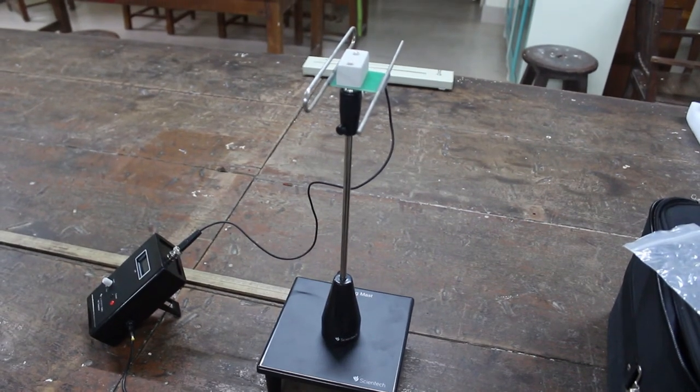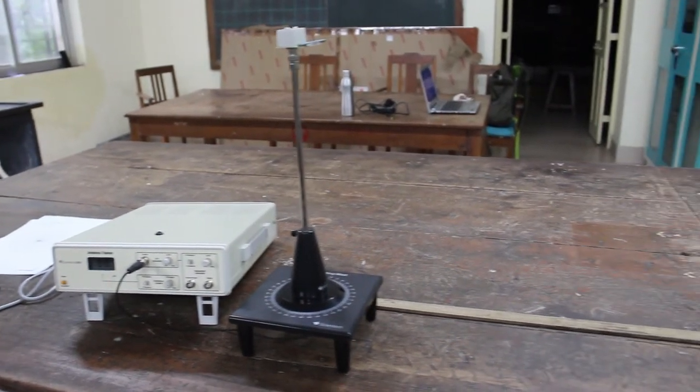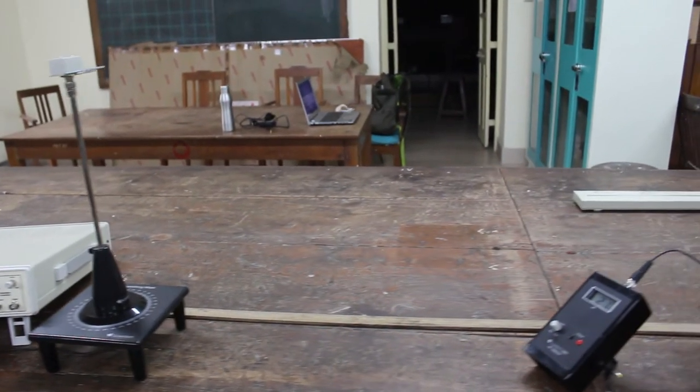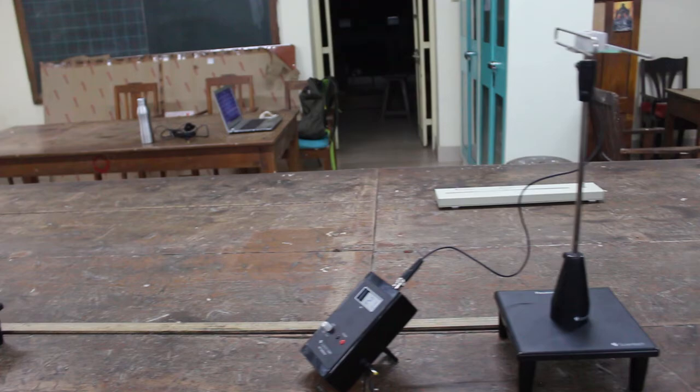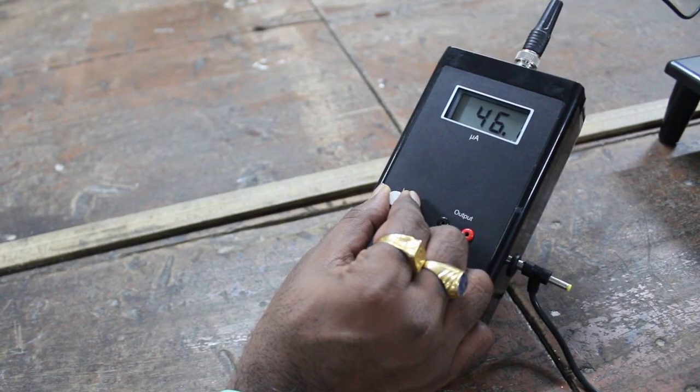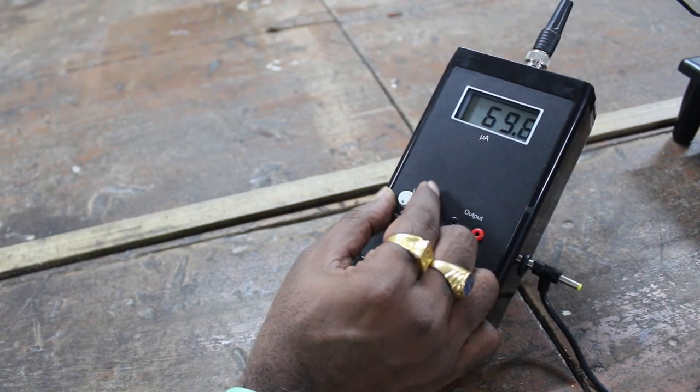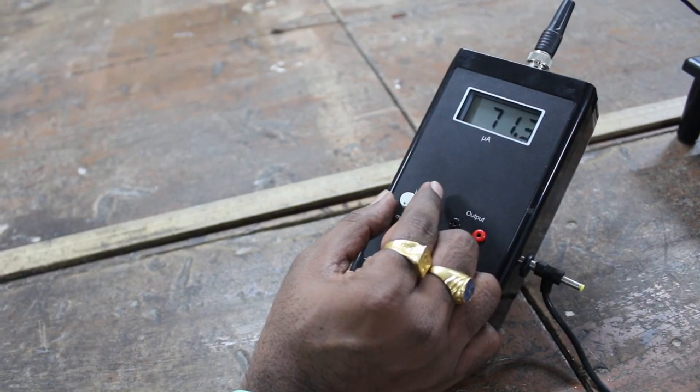Now connect the receiving antenna to the RF detector and make sure that the distance between the transmission mast and the receiving mast is equal to 1 meter. Now adjust the knob on the receiver so that it will be set to 70 microamps, which is equal to 70 percent of the transmission power.